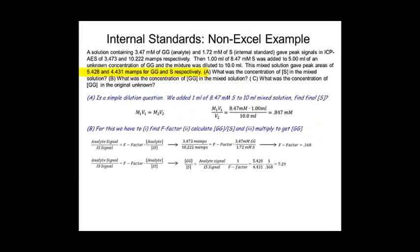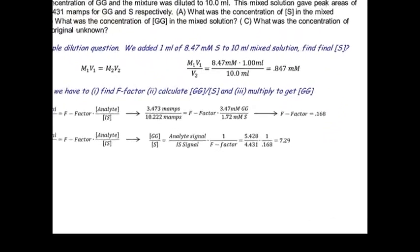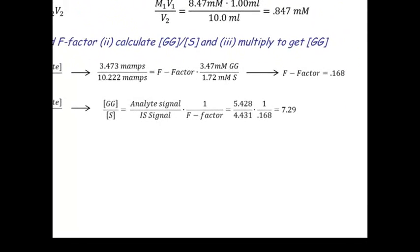Now we're going to apply the formula a second time, except now it's going to be to the unknown situation. And so here we're going to be solving for the ratio of the analyte to the standard. And then we know the F factor. That stays the same. We just plug in two new signals, that of the analyte and that of the internal standard.